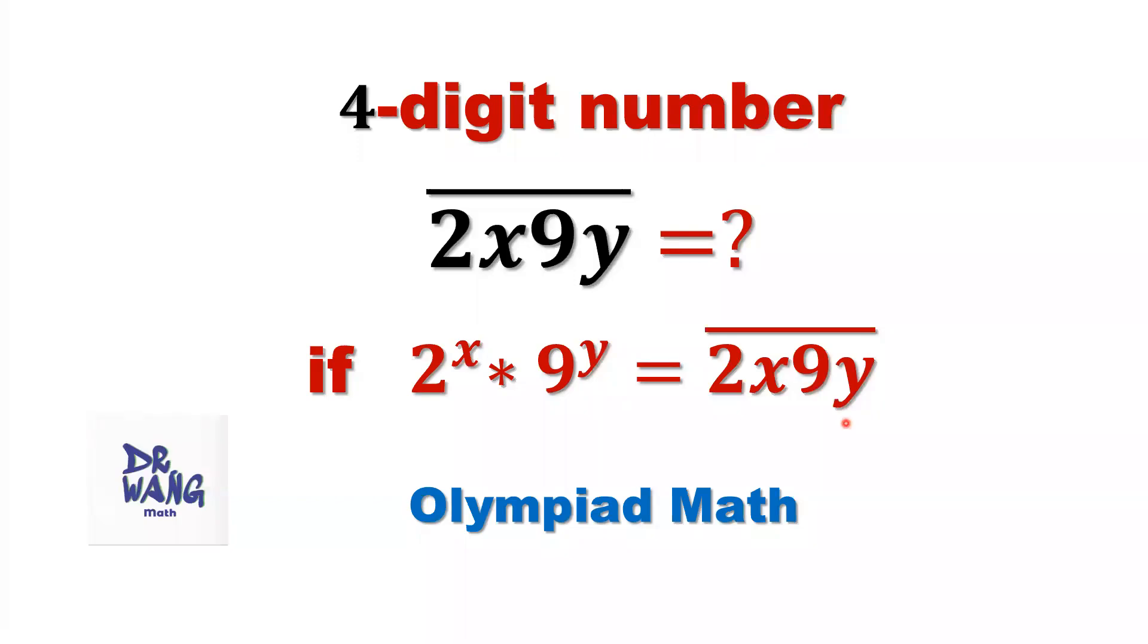Hello everyone, I'm Dr. N. Here is the question: We want to find the four-digit number 2x9y such that 2 to the power x times 9 to the power y equals 2x9y.